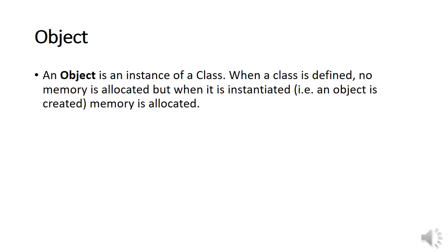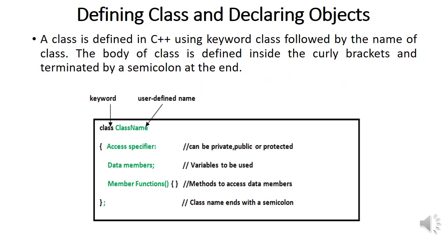The next important concept of OOP is object. An object is an instance of a class. The class gets its memory allocated only after an object is created. We will discuss how to create a class and how to create objects, and how to define a class and declare objects, in the next slide.